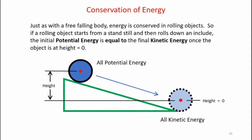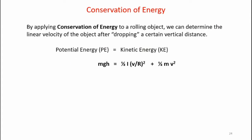The ultimate goal is to be able to predict the velocity of an object after rolling down an inclined plane. Just as with a free-falling body, energies conserve in rolling objects. If a rolling object starts from a standstill and then rolls down an inclined plane, the initial potential energy is equal to the final kinetic energy once the object gets to a height of zero. By applying conservation of energy to a rolling object, we can determine the linear velocity of the object after dropping a certain vertical distance.